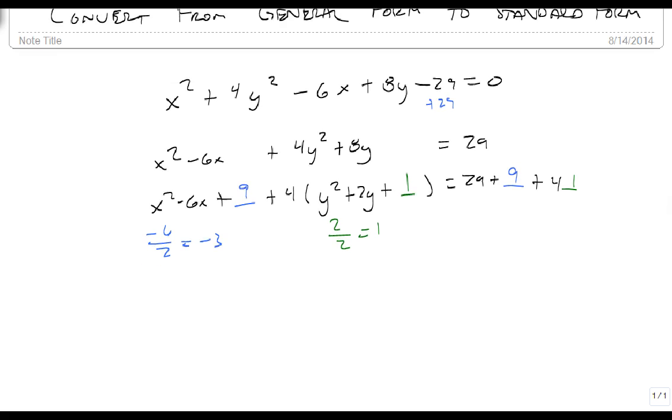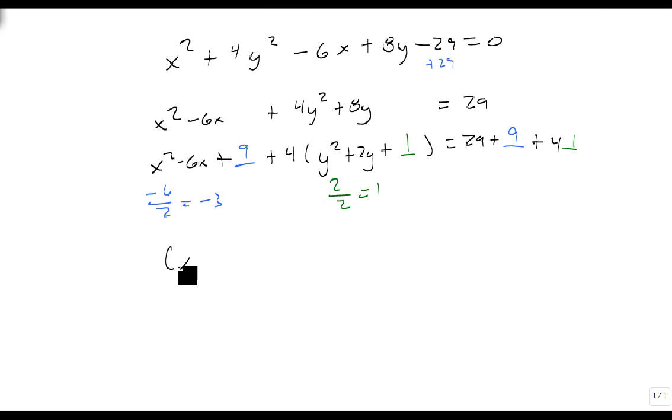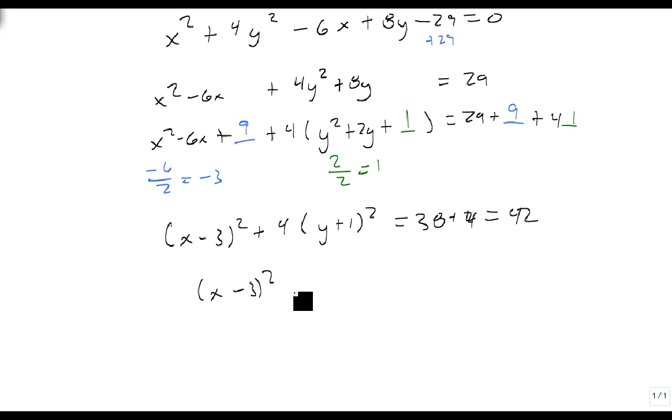We add all this together. This gives me x minus 3 squared plus 4 times y plus 1 squared equals 29 plus 9 is 38, 38 plus 4 is 42. And so we get x minus 3 squared plus 4 times y plus 1 squared equals 42.